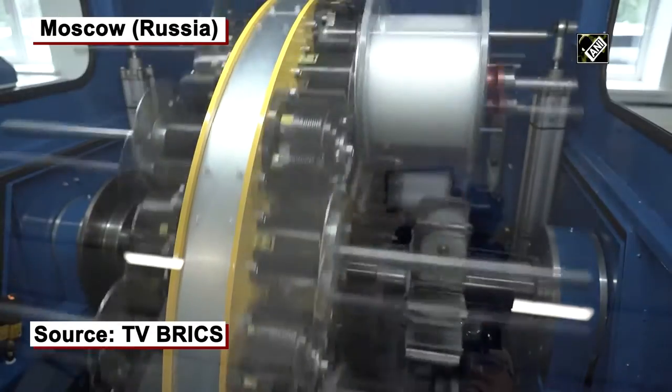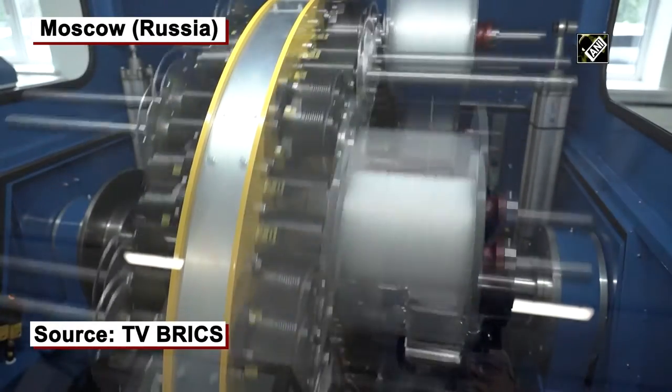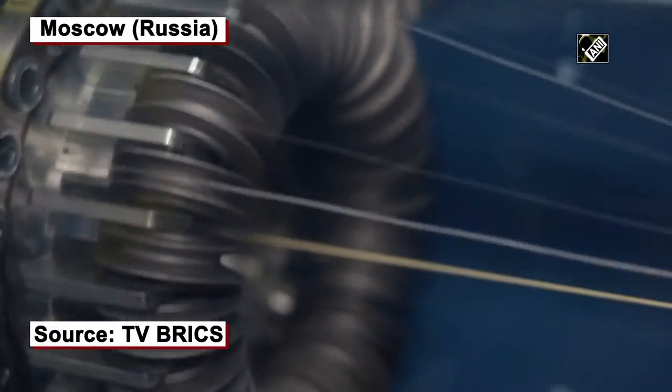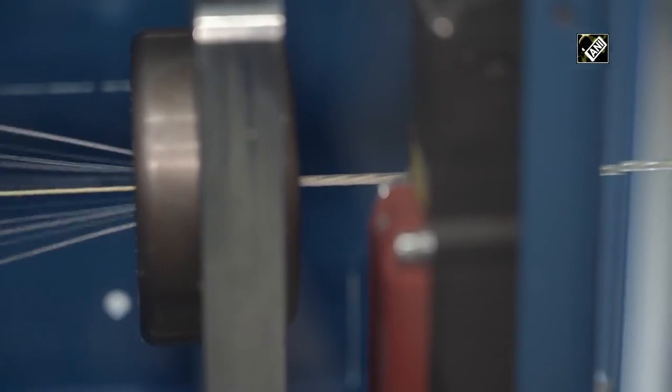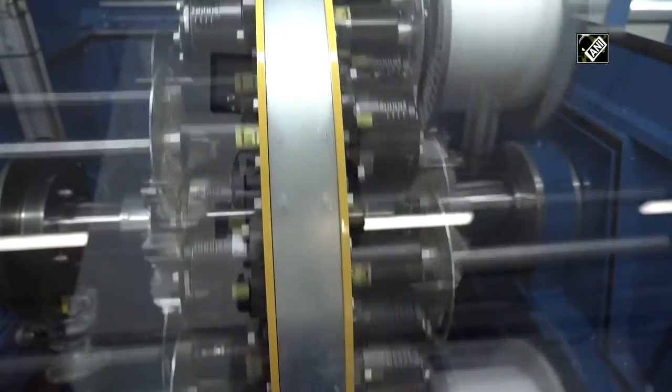A cable for an artificial heart has been created in Moscow. Engineers have spent six months to develop and implement the project. The cable has already been tested for compatibility with human tissues, which came out as successful.